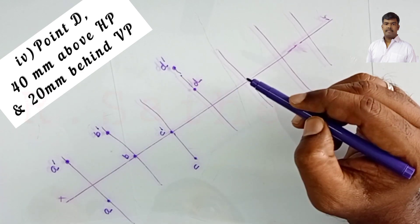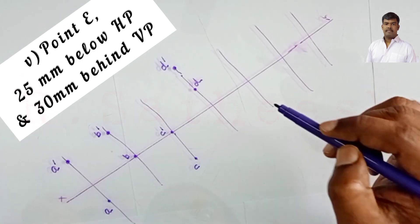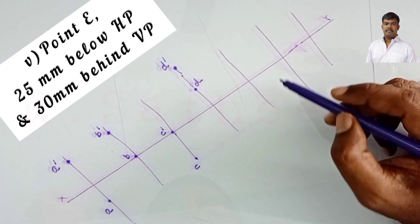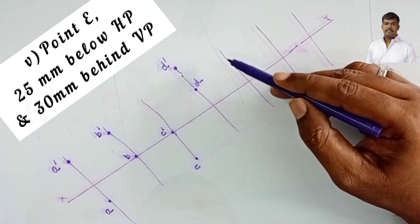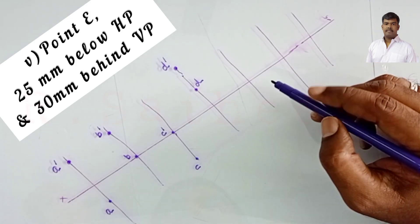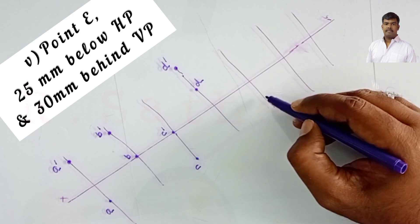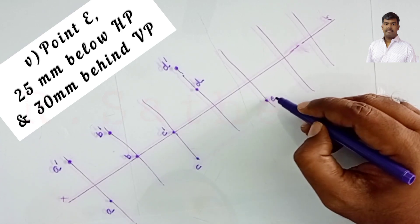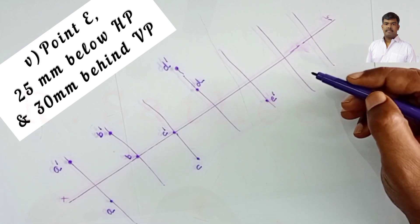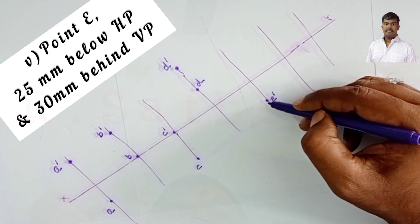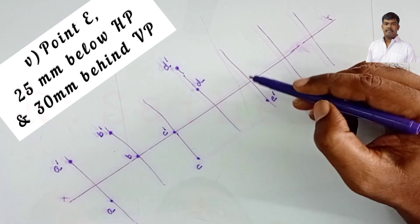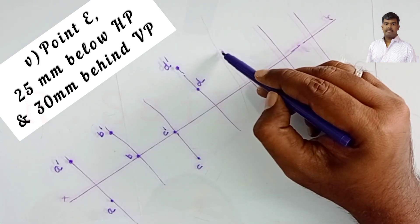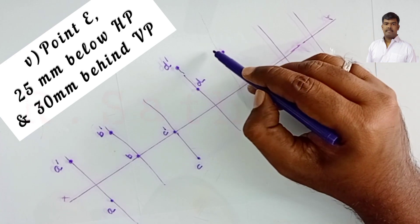Point E is 25 mm below HP and 30 mm behind VP. Below HP and behind VP means point E lies in the third quadrant. The front view E dash is 25 mm below HP — so 25 mm below XY. The top view e is 30 mm behind VP, which is above XY.